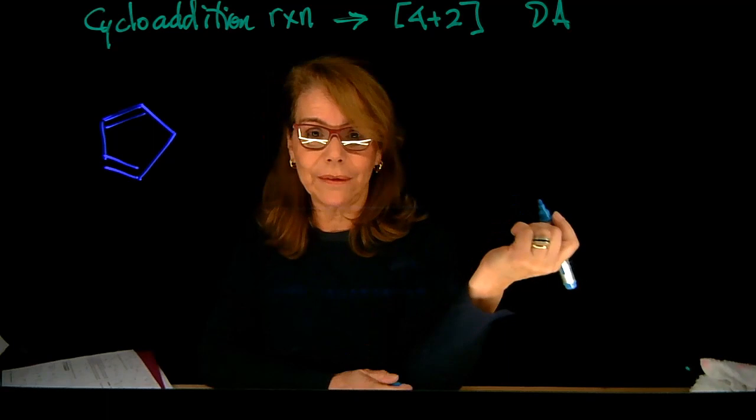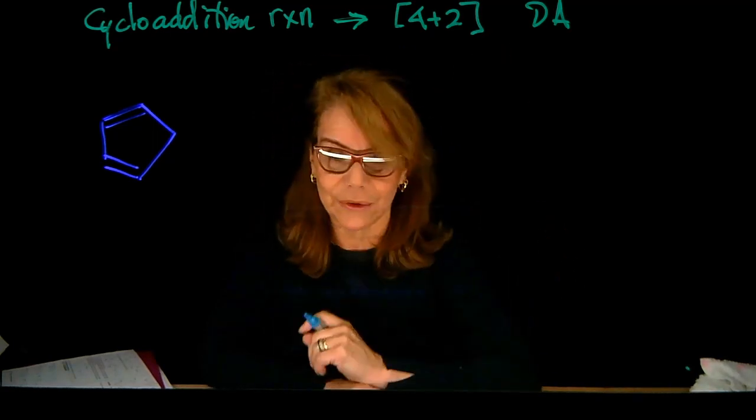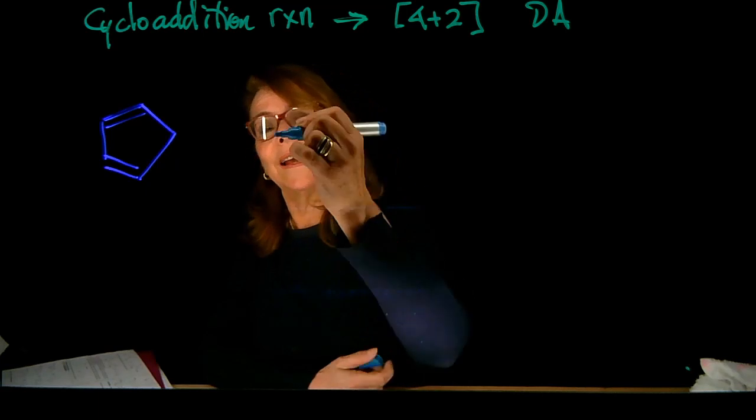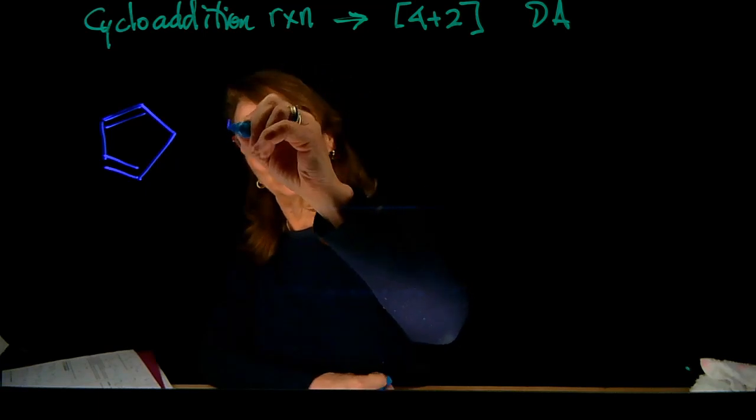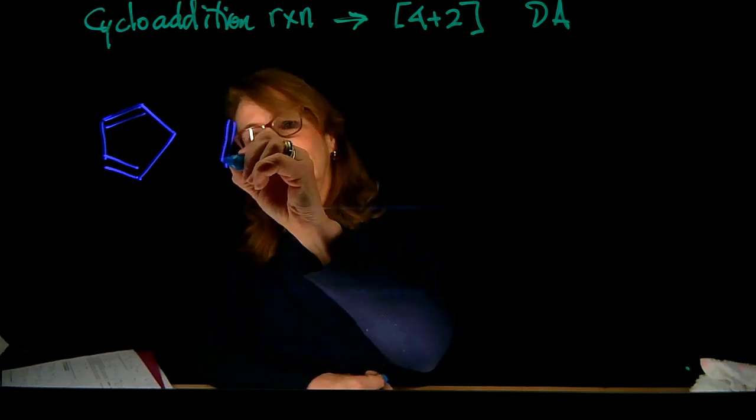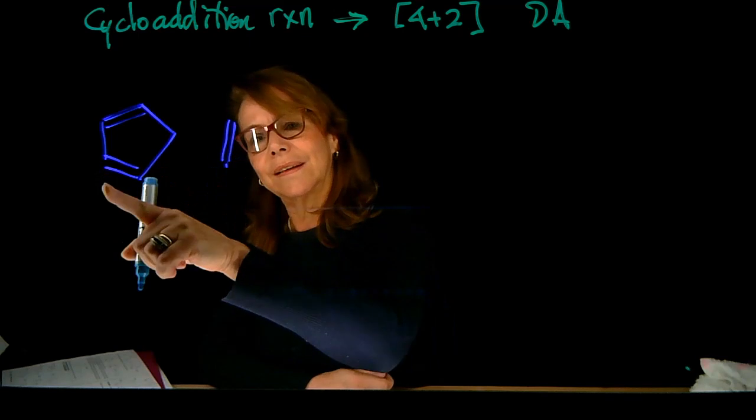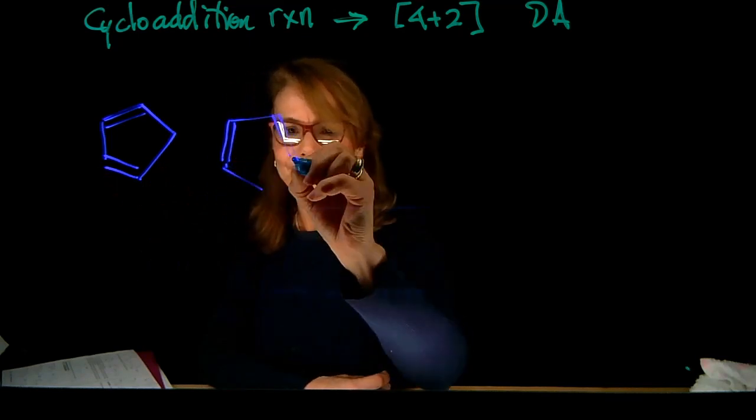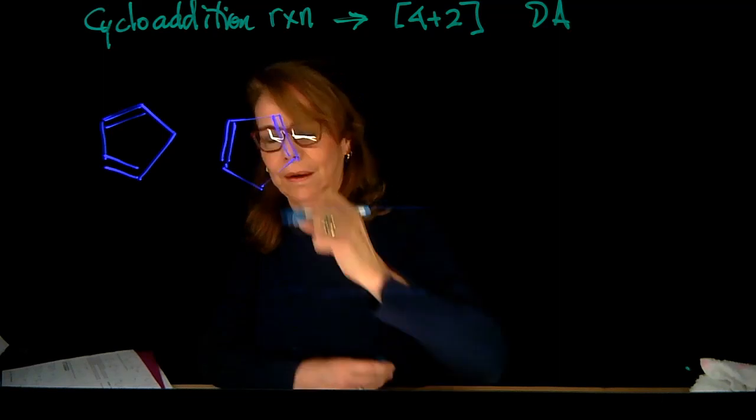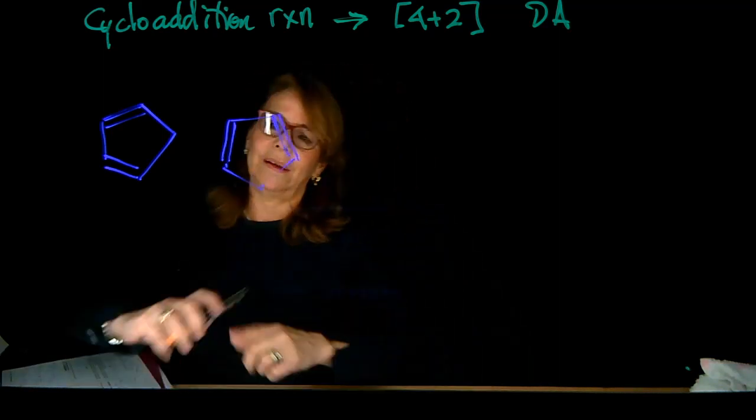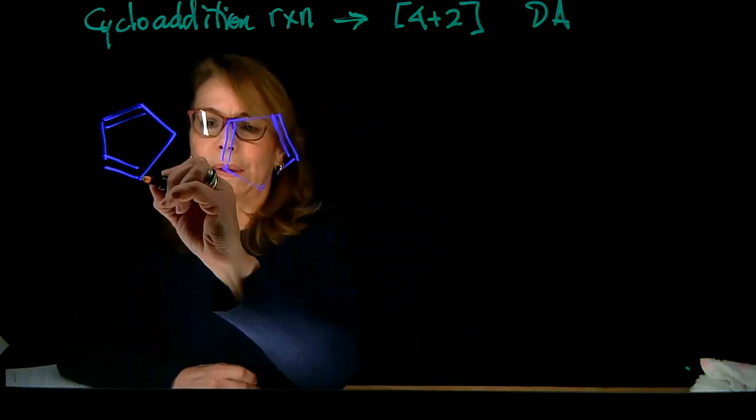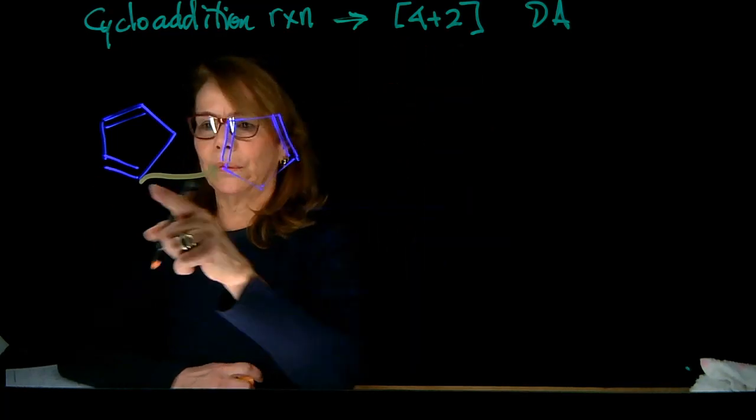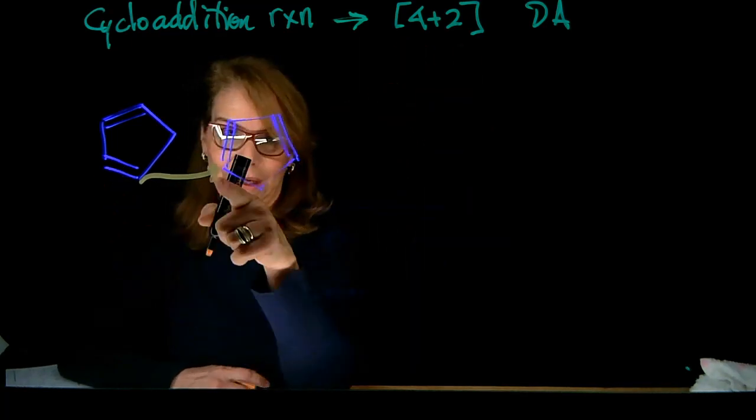It's so reactive that it can undergo this reaction with itself and dimerize. So one of the molecules will be acting as diene and the other as dienophile. And what happens here, in exactly the same manner that we have done before, we involve 4 plus 2 electrons. So I'm going to use 4 here and 2 here.